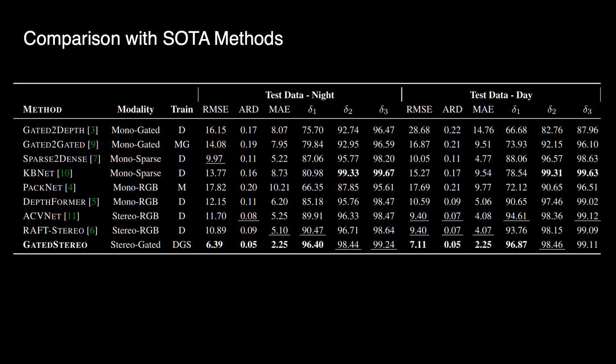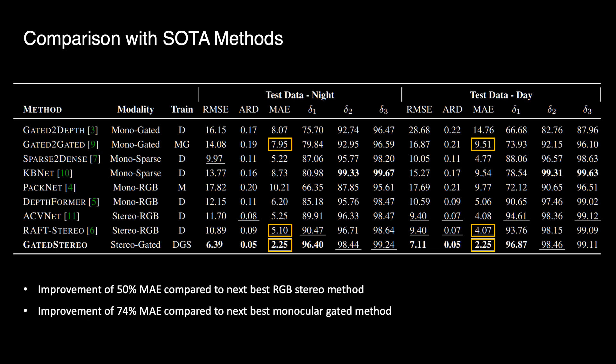This table shows the quantitative comparison of gated stereo and state-of-the-art depth estimation methods. The proposed method achieves 50% better mean absolute depth error than the next best method stereo RGB, and 74% better than the next best existing gated method. Please have a look at the paper for further results.